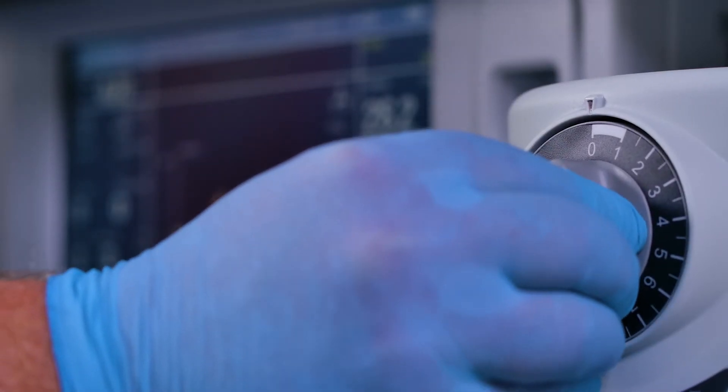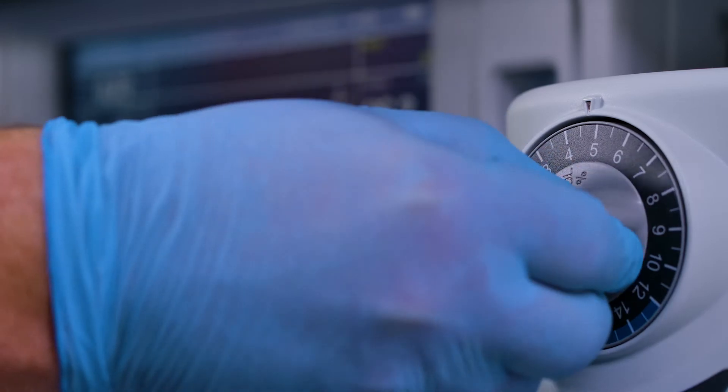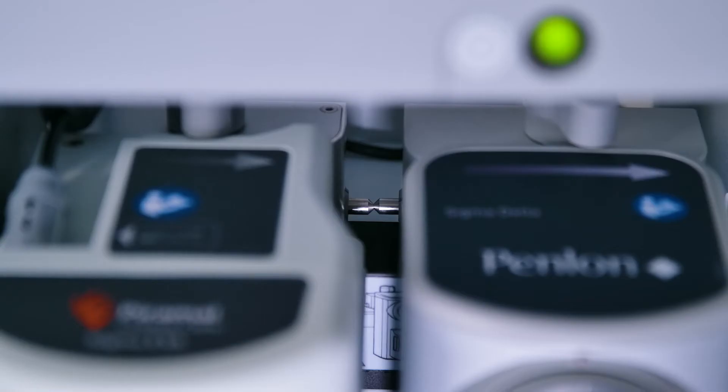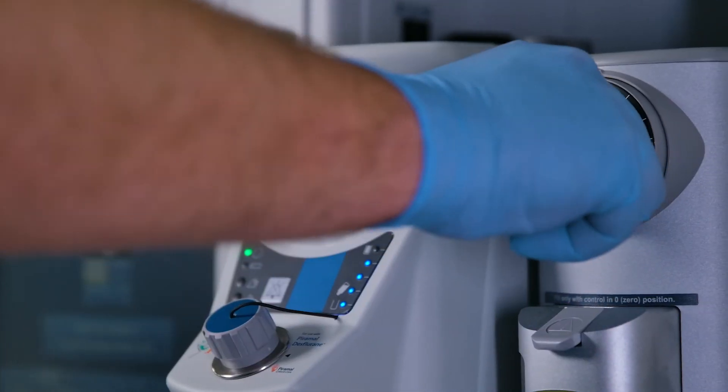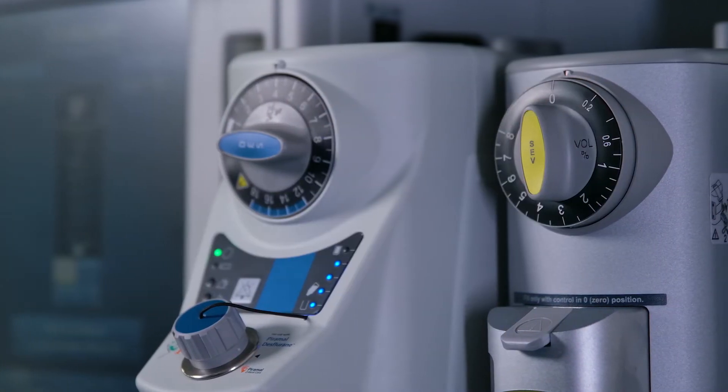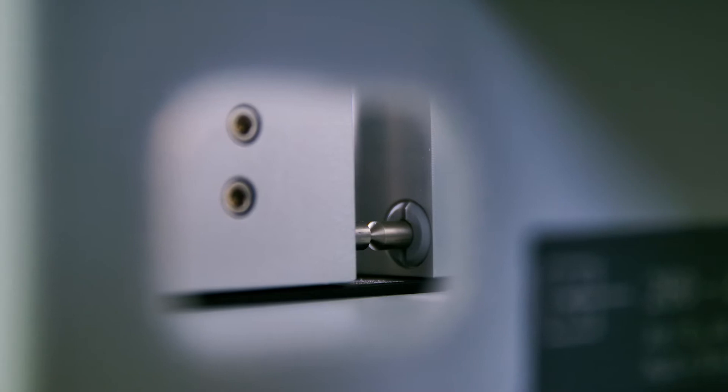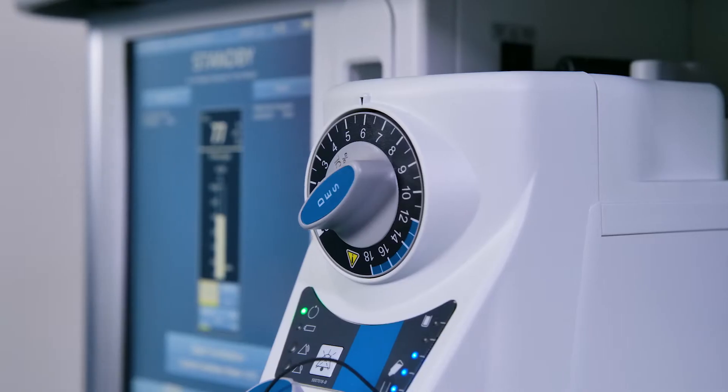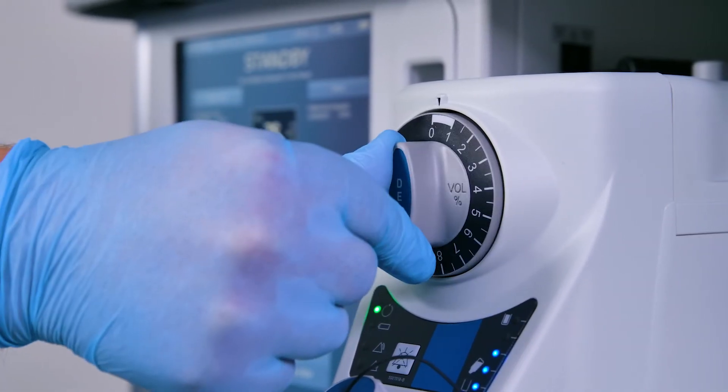Push in the concentration control dial and rotate anti-clockwise. Check that the interlock bolt moves outwards so that only one vaporizer at a time can be turned on. Check that the interlock deactivates when the control dial is returned to the locked out zero position.